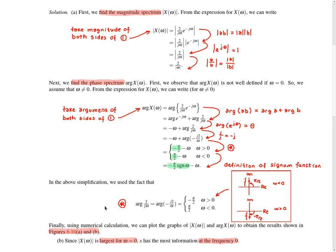Now we move on to part B of the problem. We were asked to determine at what frequency or frequencies the function little x has the most information. The approach is to look at the magnitude spectrum and find where it is largest. Looking at the expression obtained for the magnitude spectrum, clearly this function has a maximum at omega equal to 0 — at the origin — where in fact the function is unbounded. So the conclusion is that because the magnitude spectrum is largest at frequency 0, the function little x has the most information at frequency 0.